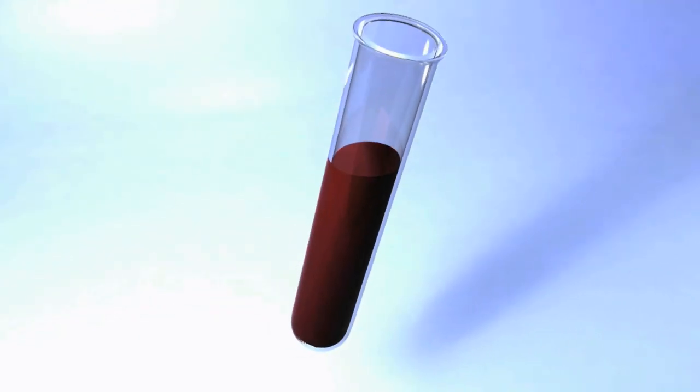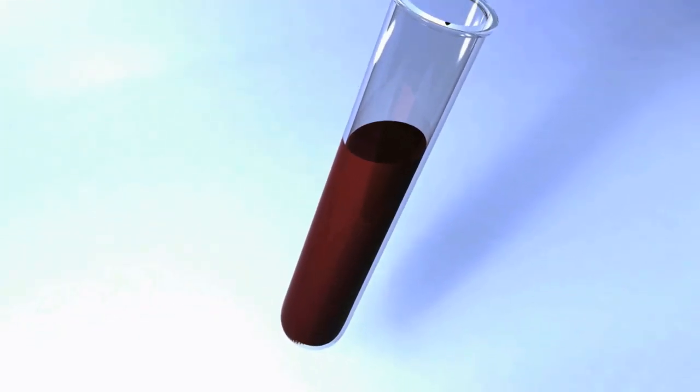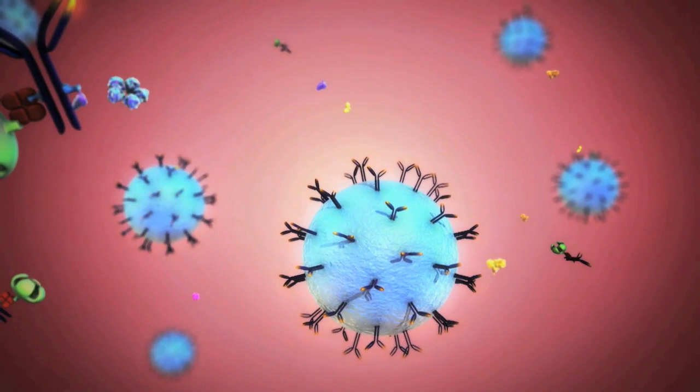The Simoa process begins when standard paramagnetic particles coupled with an antibody designed to bind to a specific protein target are added to the biological sample.